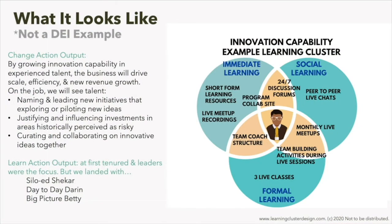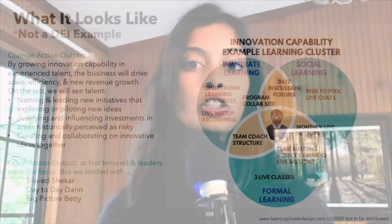As we thought about Siloed Shaker, Day-to-day Darren, and Big Picture Betty, we realized we really want to do some formal learning on innovation, leading innovation programs, and building innovative capability. But everything else we wanted to do had much more to do with social learning — what can these folks have that's immediately available to them that they could do in short stints, rather than spending a half a day or even an hour in a formal type of session.